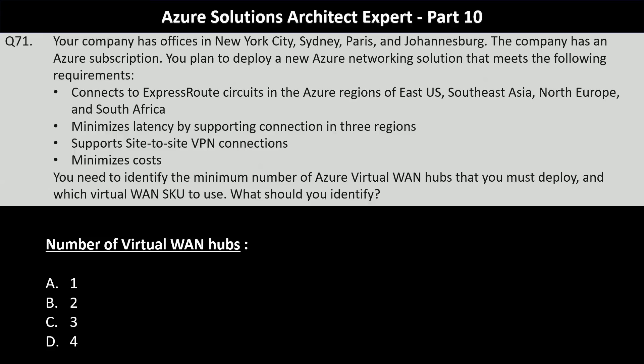For the number of Virtual WAN hubs, the options are one, two, three, or four. You should deploy three Azure Virtual WAN hubs. Each Virtual WAN hub can connect to an ExpressRoute circuit, so having hubs in strategic locations allows you to utilize this feature effectively. By deploying hubs in three different regions, you can provide optimal routing and minimize latency for connections from the offices in New York City, Sydney, and Paris.